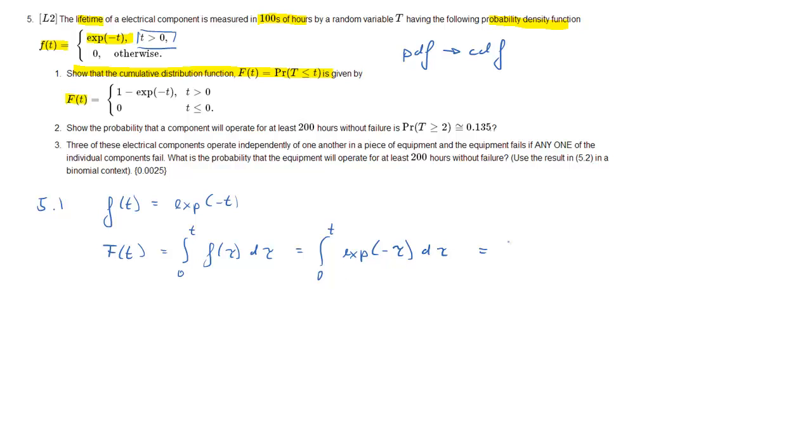And we now need to find the function of which exponential negative tau is the derivative, and that is, knowing the derivative rules of the exponential, just negative exponential of negative tau plus a constant of integration.